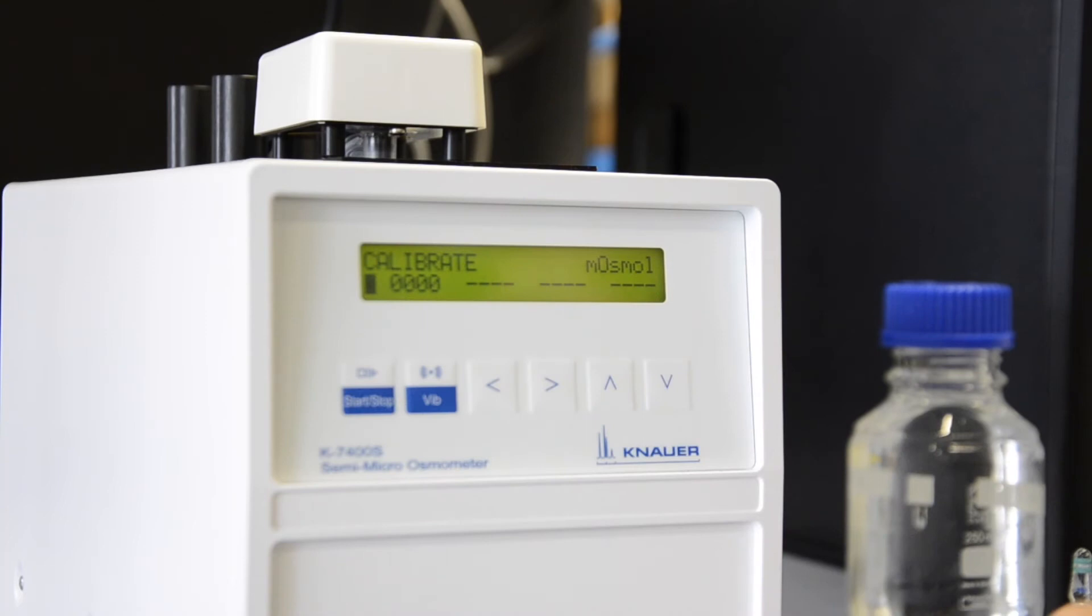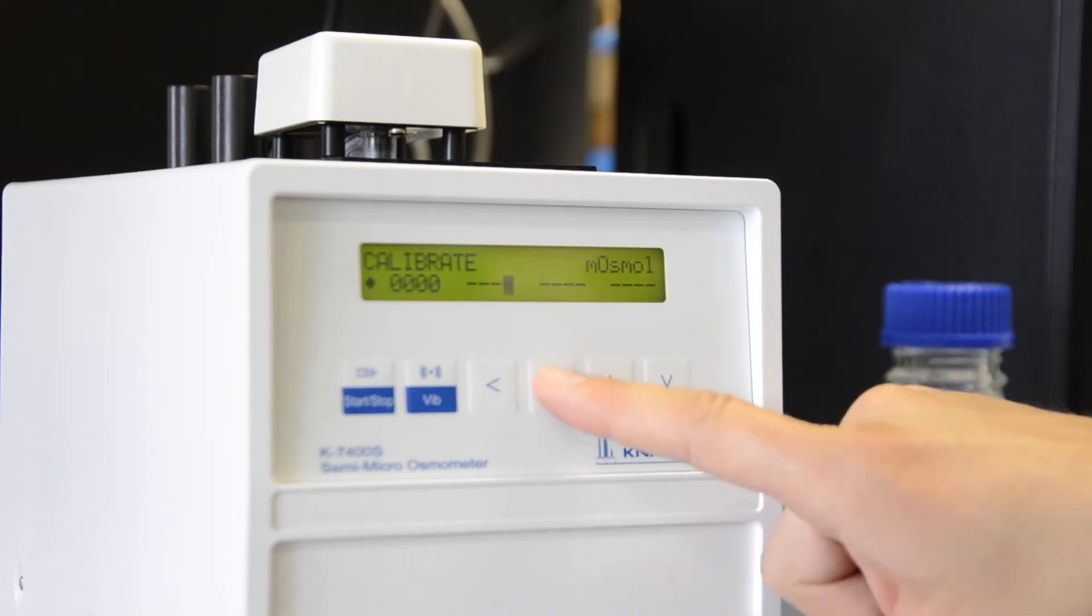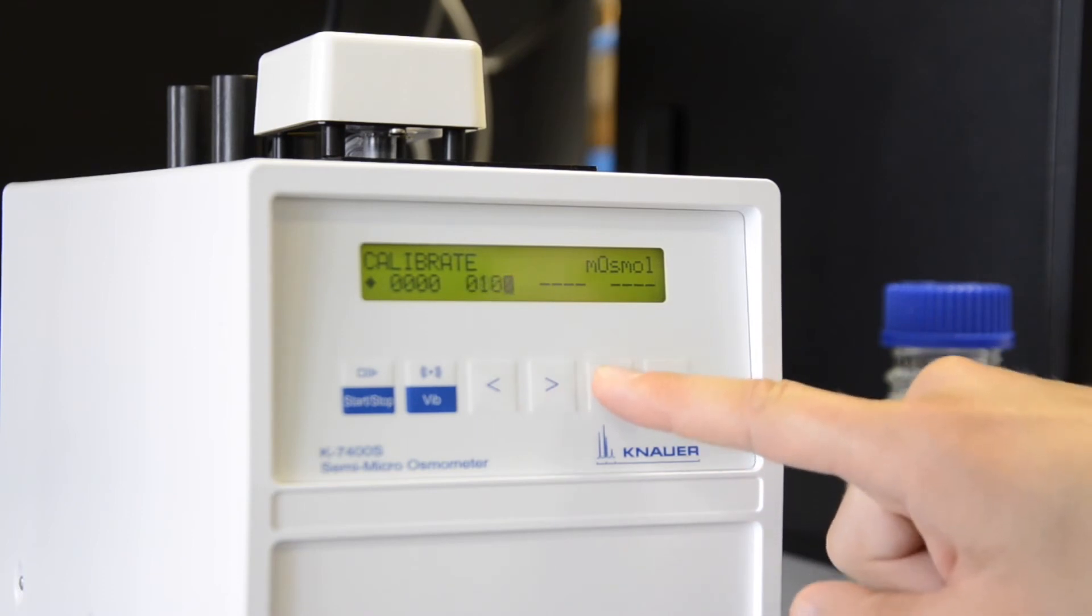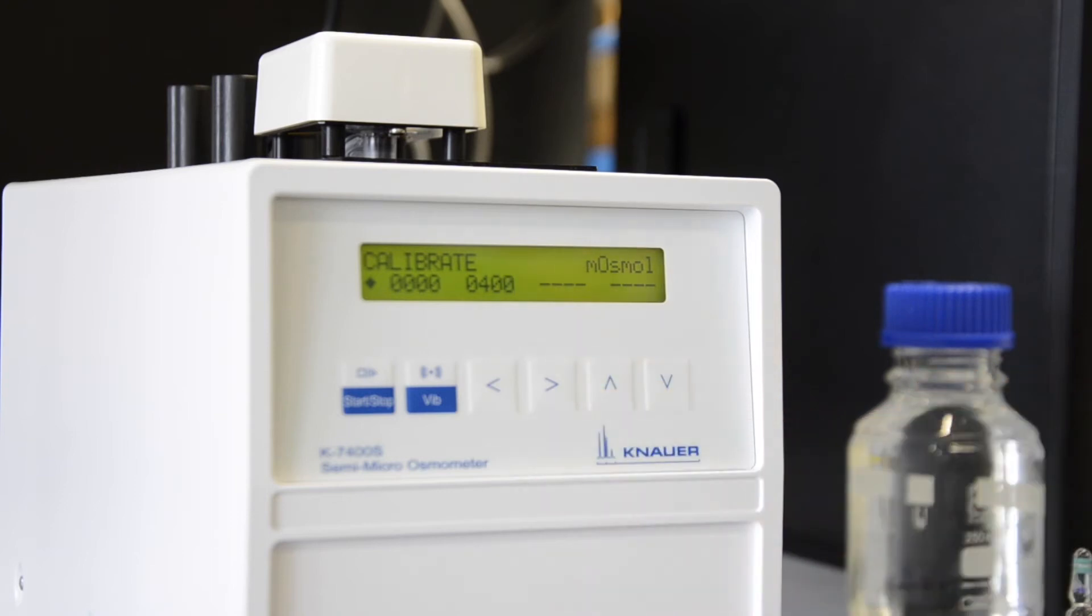To set the second calibration point you have to do the same procedure again but now selecting the second entry of the display. Choose it with the right button and then select the respective osmolality you want to calibrate. In our example this is 400 milliosmol per kilogram.